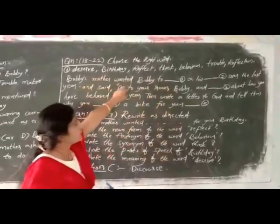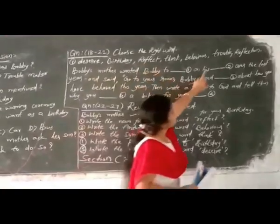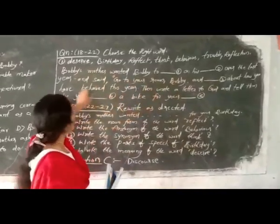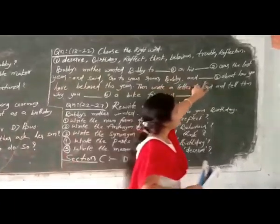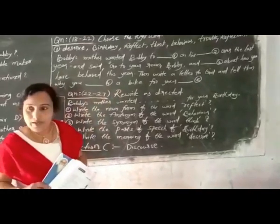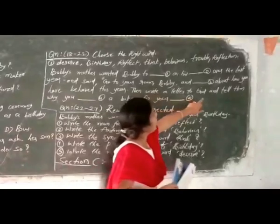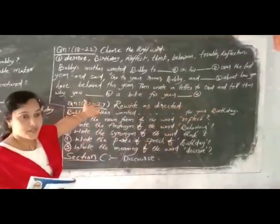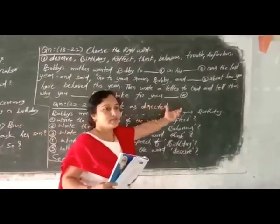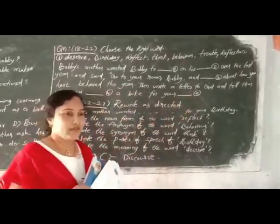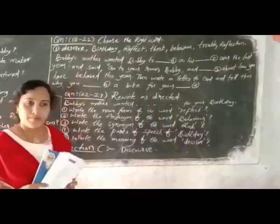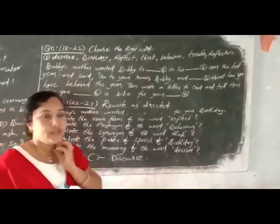The first blank: 'Bobby's mother wanted Bobby to reflect.' And the second blank: 'Over the last year I said, go to your room Bobby, and talk about how you can behave this year.' Then: 'Write a letter to God and tell him while you...' — you fill in the correct word. It is very clear; you need to go through the passage once and you can fill in the blank.